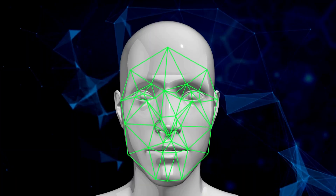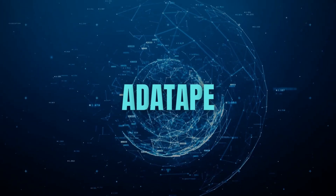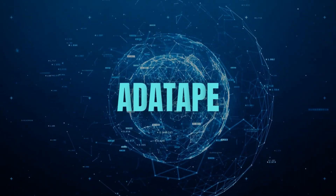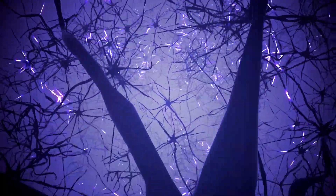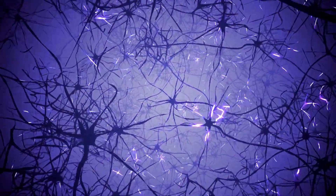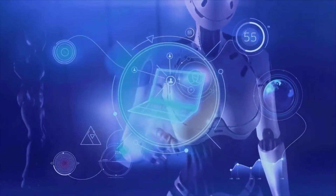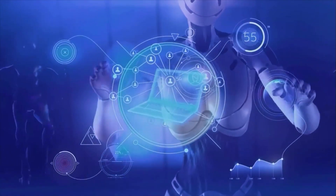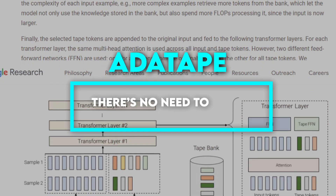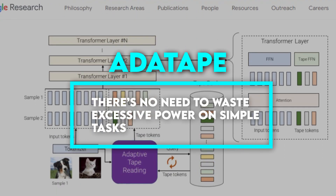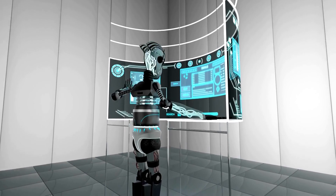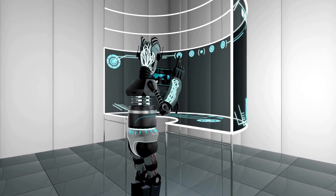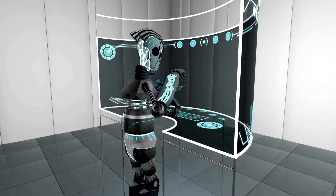Extensive experiments on image recognition tasks demonstrate that Adatape can deliver better performance while keeping the computational cost low. This remarkable neural network can adapt to any task with ease, making it an invaluable tool for a variety of applications. With Adatape, there's no need to waste excessive power on simple tasks. It is designed to expertly balance flexibility and capability, allowing it to easily tackle both straightforward and intricate tasks.